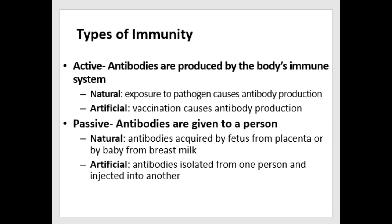With active immunity, a person makes their own antibodies — this may happen when naturally exposed to a pathogen, or artificially after receiving a vaccination, which is a pathogen that's been weakened or attenuated. With passive immunity, antibodies are given to a person who didn't make them, usually via IV. But it also happens naturally — when antibodies pass from a mother to her fetus through the placenta, or when a baby drinks breast milk containing antibodies.